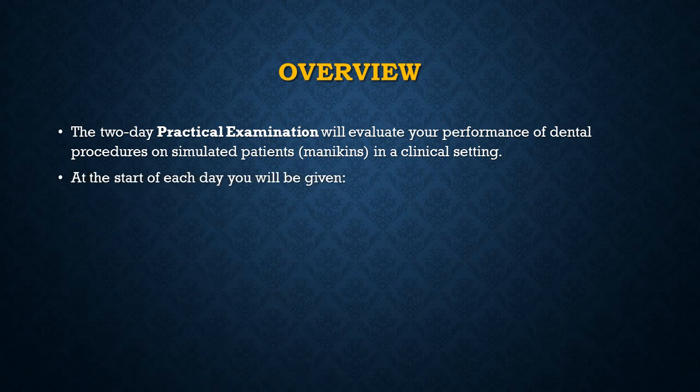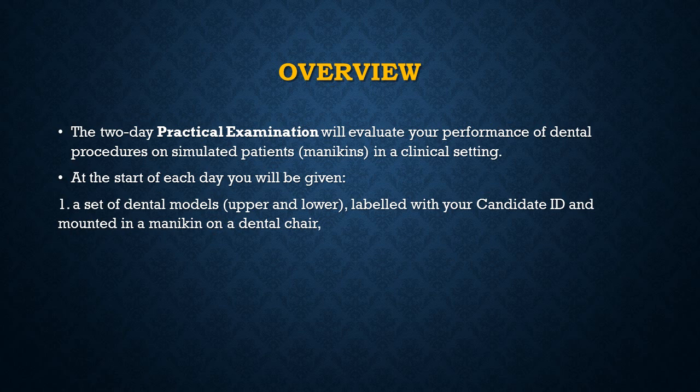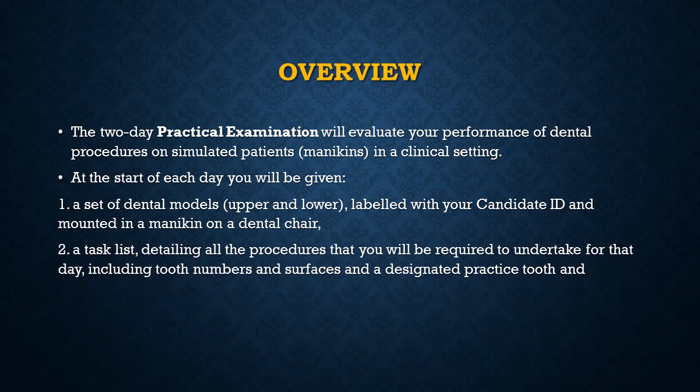At the start of each day you will be given first a set of dental models, upper and lower, labeled with your candidate ID and mounted in a mannequin. They are using the Columbia dental form — you need to visit the Columbia website to know the specific numbers of these models. You can buy the models from Columbia USA or from One Dental in Australia; both have these ABC models.